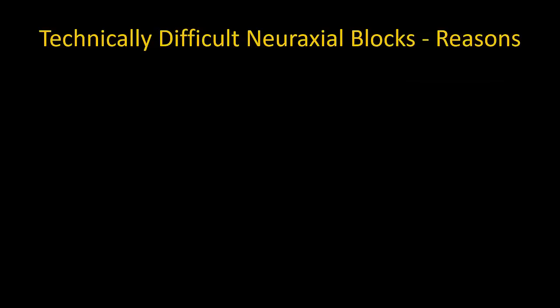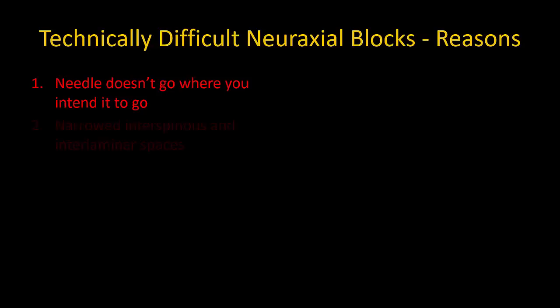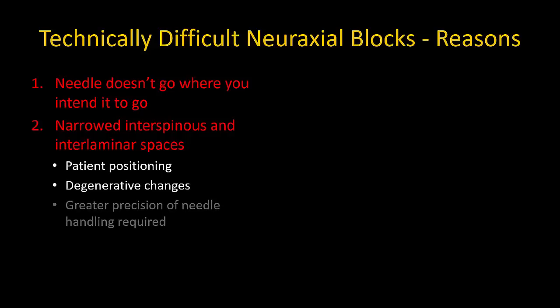There are four major reasons why difficulty may be encountered when performing spinal or epidural anesthesia. First, when inserting the needle, it doesn't go where you intend it to go. Second, the spaces that the needle must traverse — the interspinous and interlaminar spaces — are narrower than usual. This may be due to suboptimal patient positioning and a persistent lumbar lordosis, or degenerative changes in the spine.